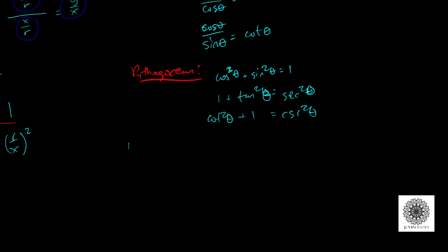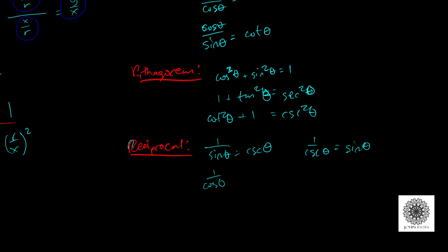The reciprocal identities are: 1/sin θ = csc θ and 1/csc θ = sin θ; 1/cos θ = sec θ and 1/sec θ = cos θ; 1/tan θ = cot θ and 1/cot θ = tan θ.